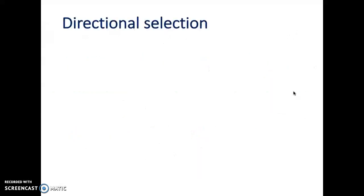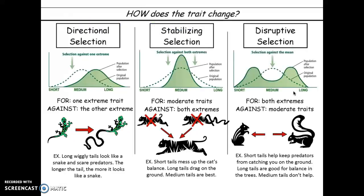The first one is called directional selection. Instead of memorizing the notes, what you really need to do is understand these three graphs — being able to match these three graphs with the name, and really understand what's going on in the graph, what causes it. Remember the graph, be able to interpret it, and be able to explain what happens and why this curve shifts the way it does.